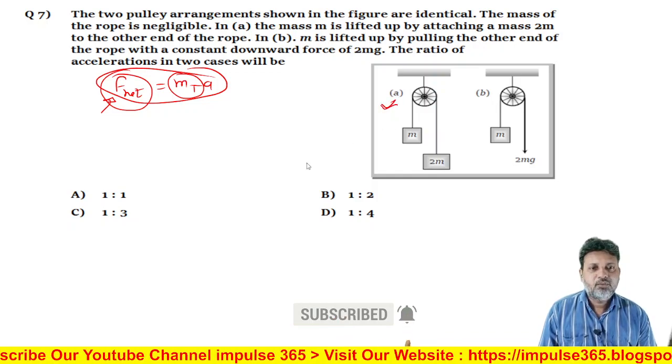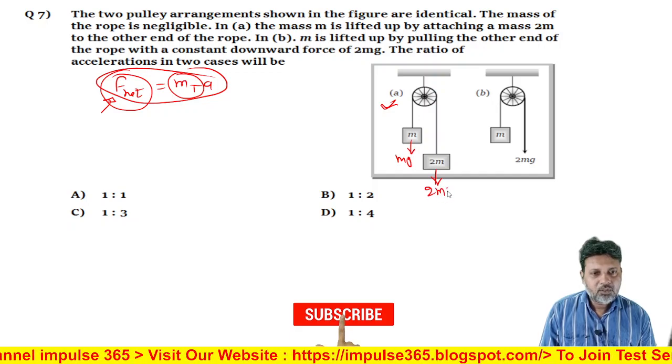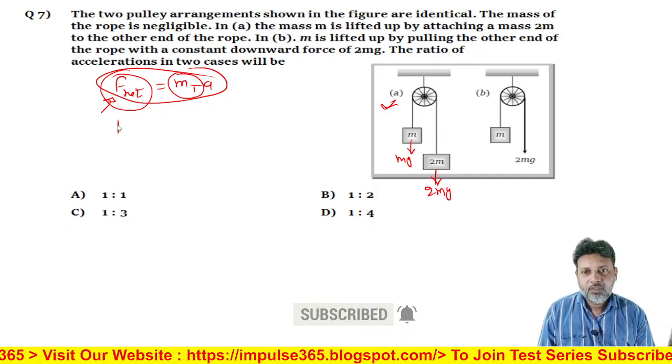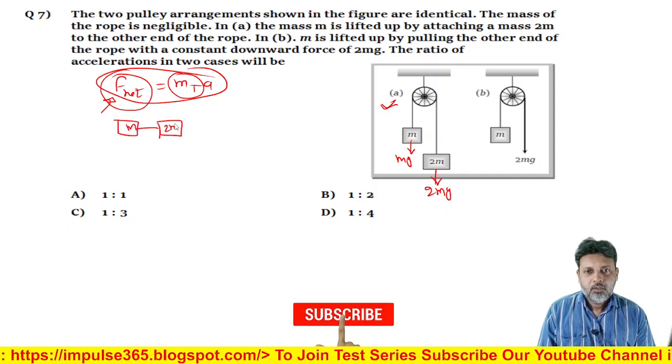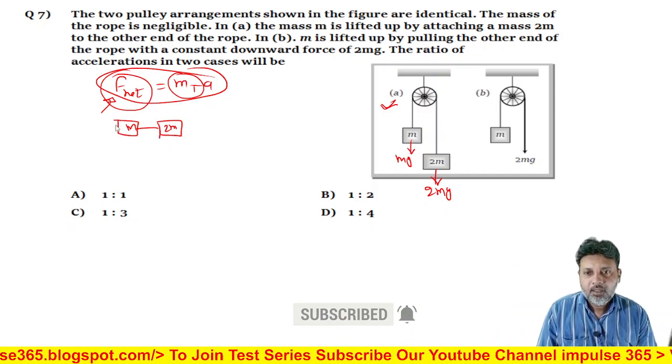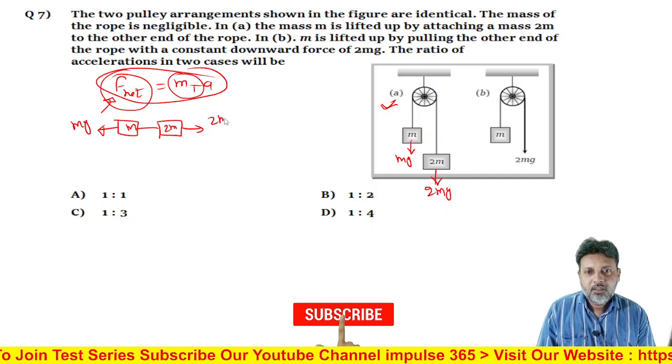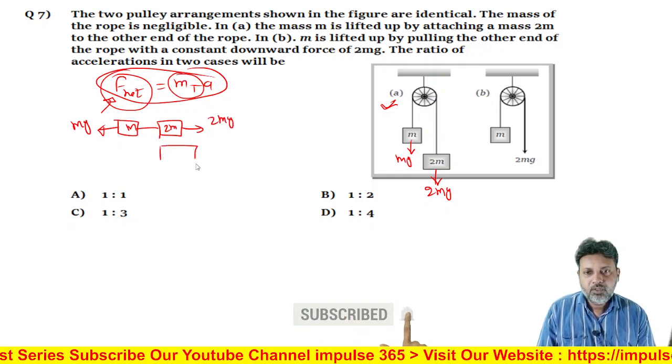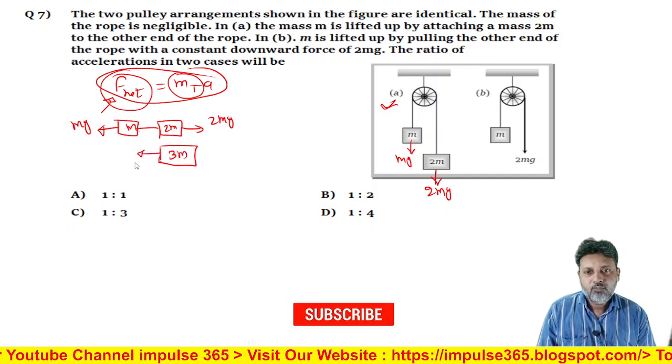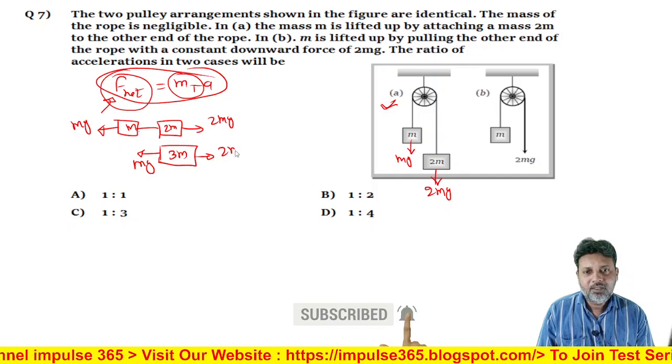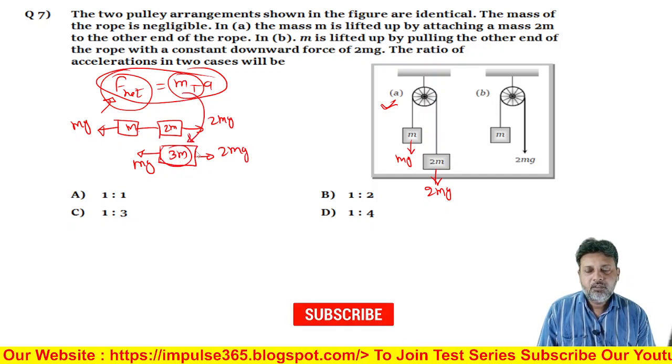If the first case is Mg and the 2Mg is the gravitational force, then we treat the entire system as one mass. M aur 2M ko 3M kar diya maine, to MG idhar lag raha hai, left side mein, right side mein 2MG lag raha hai. To ab MT ki value kya ho gayi, yeh MT ki value ho gayi, is case mein 3M ke barabar.